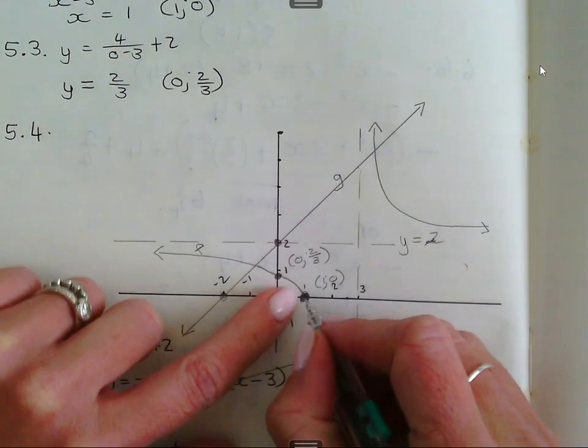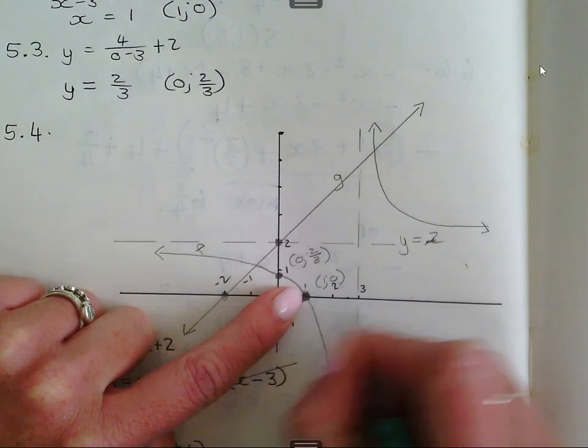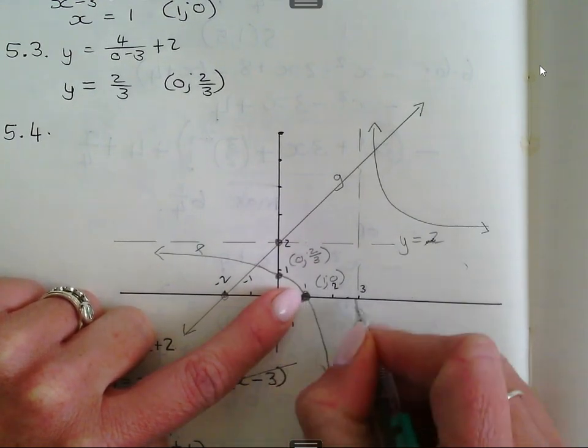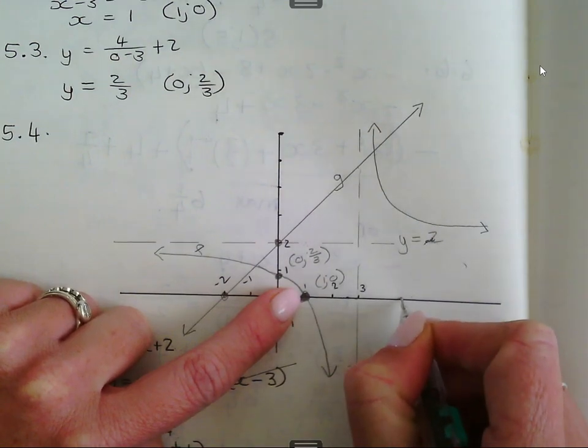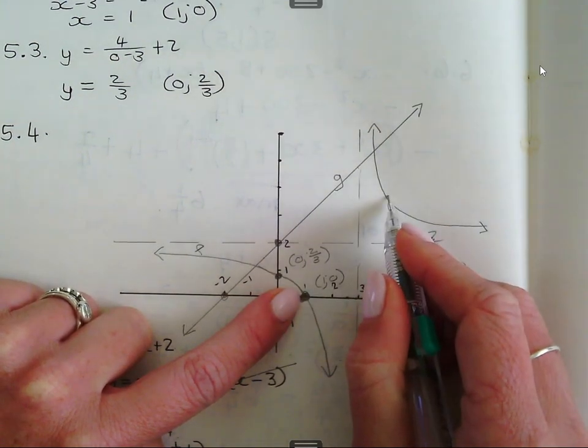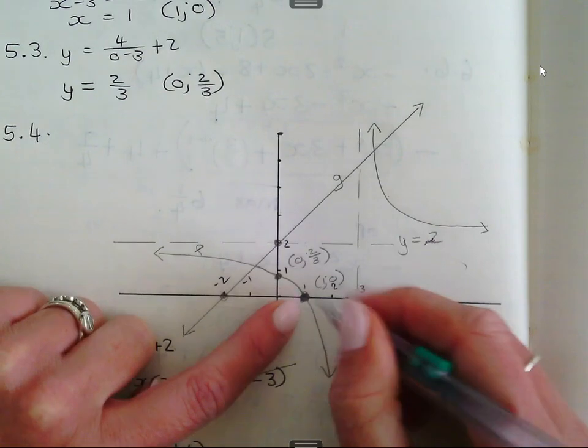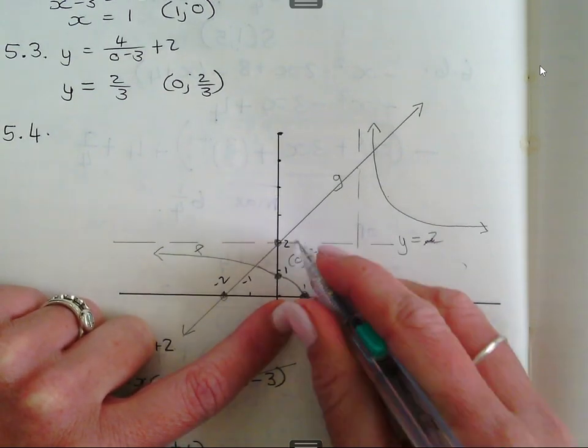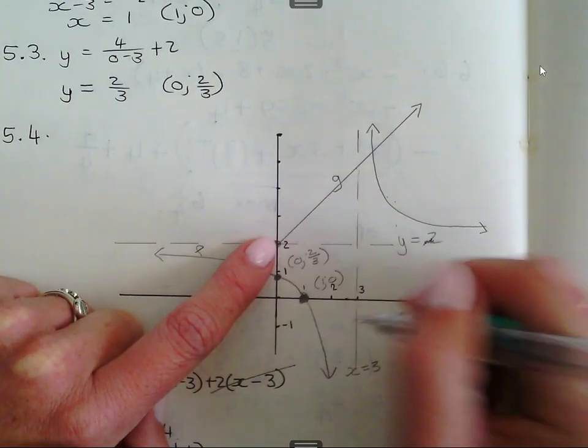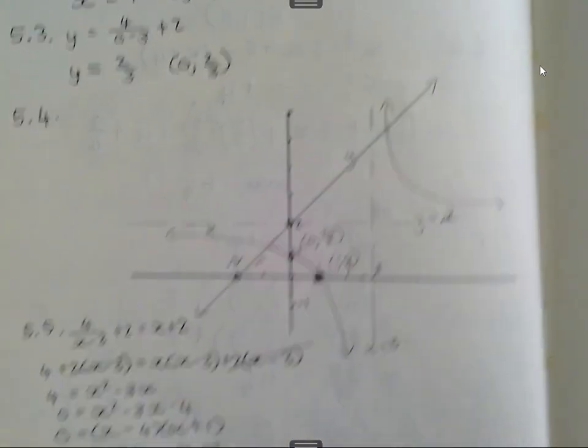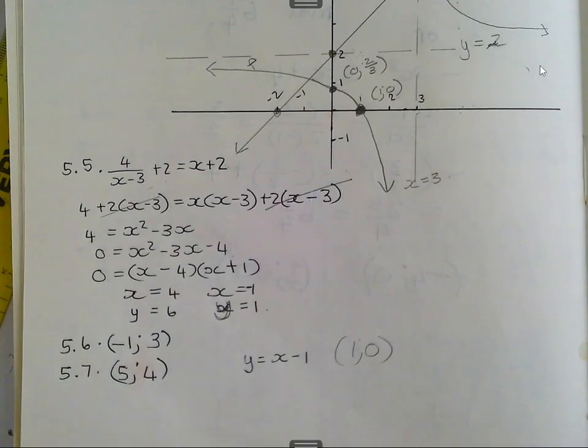Nou wat jy moet ontdaan met die symmetrie as, dit beteken dis die refleksie van wat aan die andere kant is. So as hierdie 1 en 0 is, en hy sy x-woorde is 2 woordes van hierdie asymptote af, dan gaan hy aan daardie kant ook 2 woordes van die asymptote af moet wees daal. En hy is 2 woordes af van die asymptote, so hy gaan 2 woordes op moet wees. So jy gaan basically net sê 2 plus 2 en 3 plus 2, en dan krij jy een koordinaat wat dan ook 5 en 4 is.